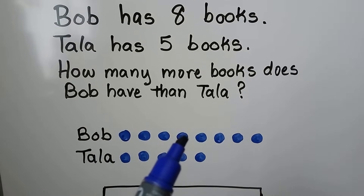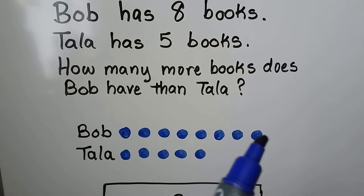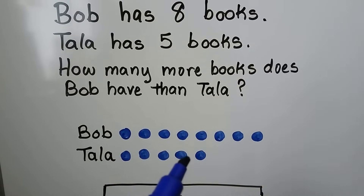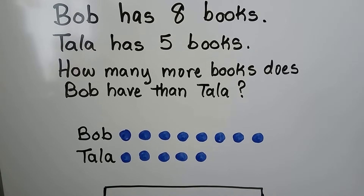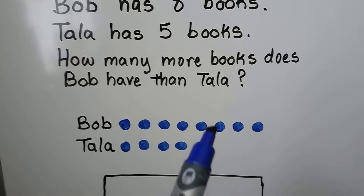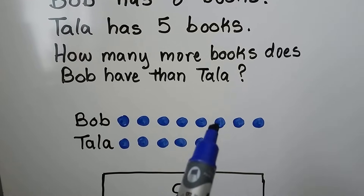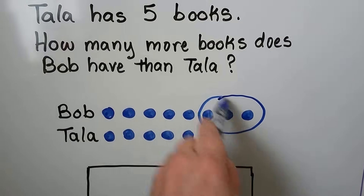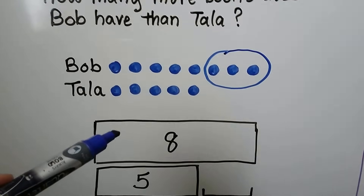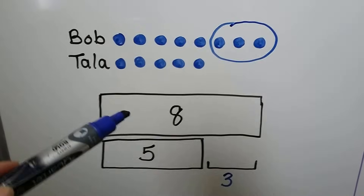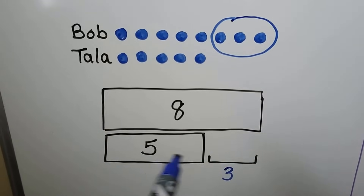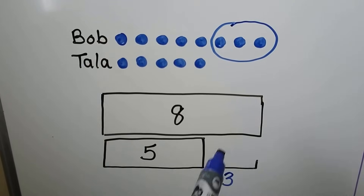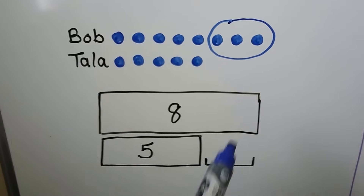We count one through eight dots for Bob, and one through five dots for Tala. We can see the difference between the two numbers — see how this part is sticking out? Eight goes in the big box, five is underneath, and the difference right here is three: one, two, three.